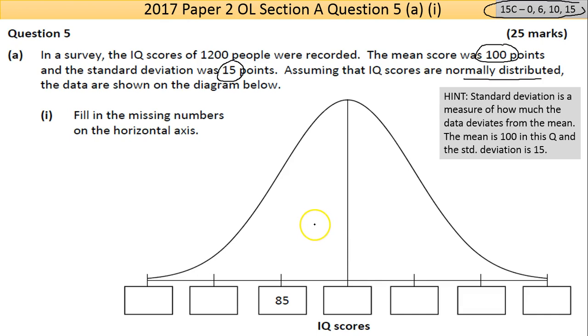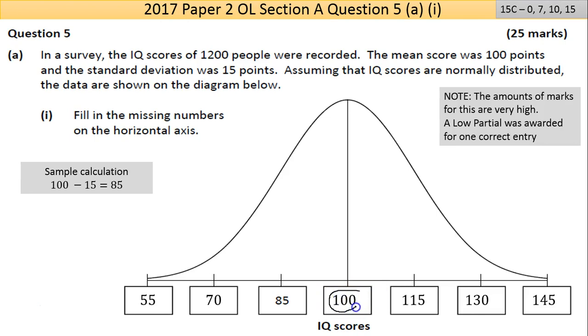So the mean is 100. One deviation below is 85—that makes sense, so 15 from 100 is 85. I've shown the sample calculation up here. Once you show one sample calculation, you're fine. Then one standard deviation above the mean is 115, plus two is 130, plus three standard deviations is 145. Take away one deviation was 85, take away two deviations is 70, three deviations is 55.